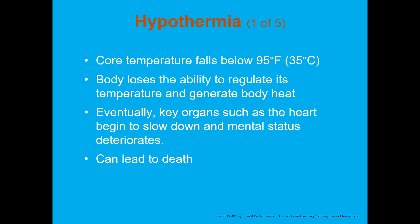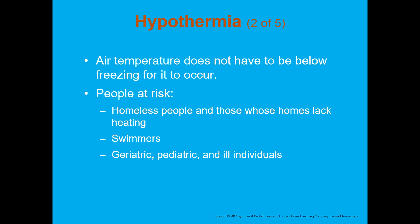Hypothermia is defined as a core temperature that falls below 95 degrees Fahrenheit. The body loses the ability to regulate its temperature and generate body heat, key organs like the heart begin to slow, and you'll see bradycardia and altered mental status. The air temperature does not have to be below freezing — it just has to be below body temperature. Most people can compensate down into the 40s and 50s, but those in high-risk age groups or without appropriate clothing have a harder time.